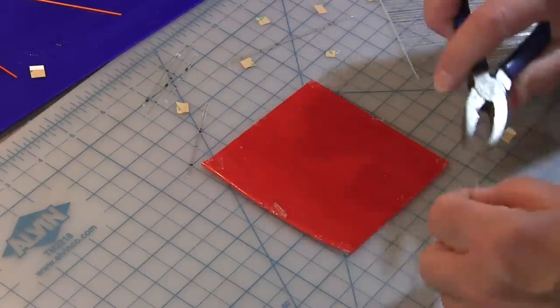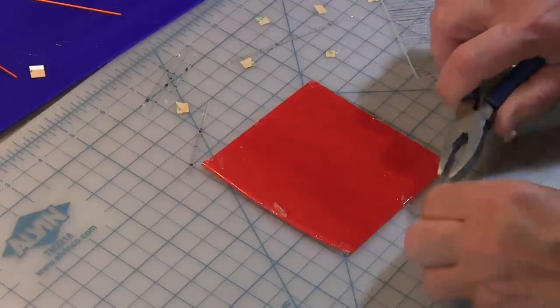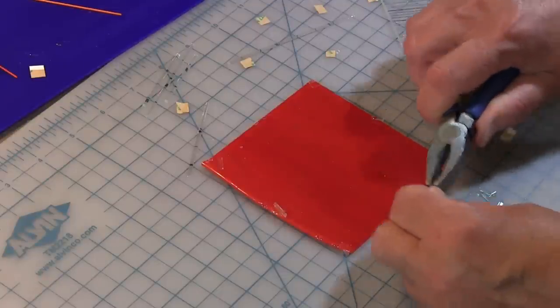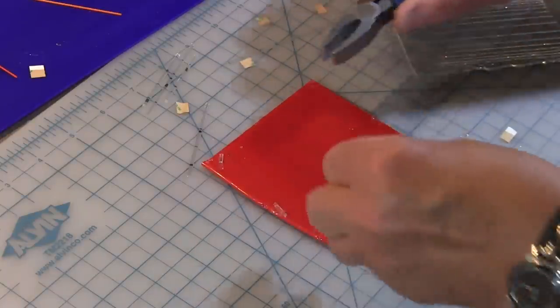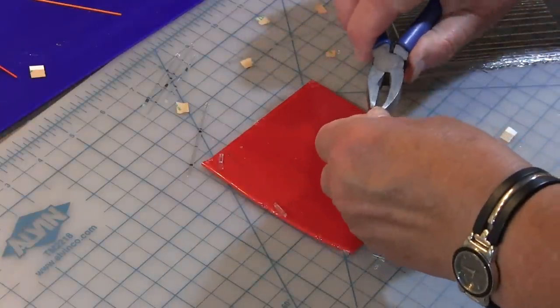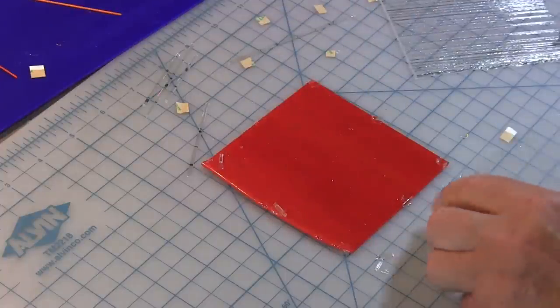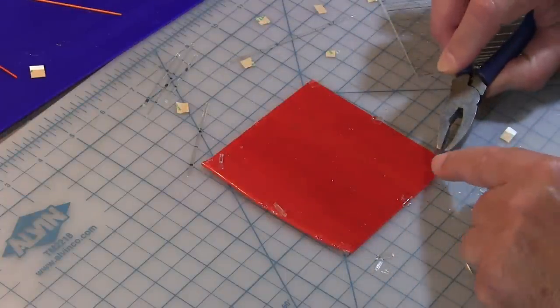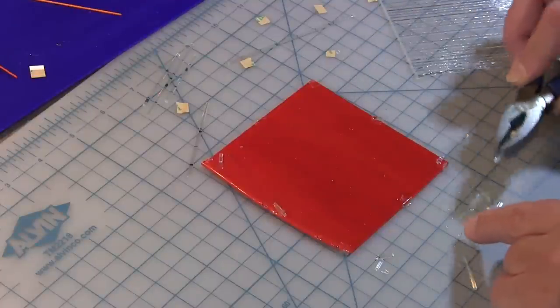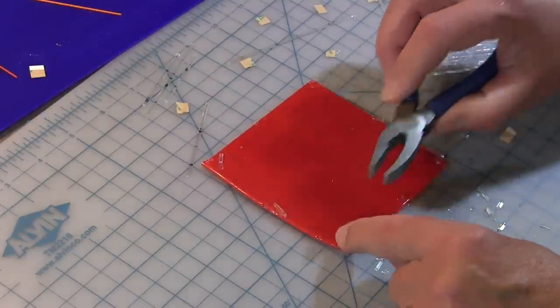And then using your grozing pliers, you can take clear stringers and break them off. You want to have little tiny pieces and pick up those tiny little pieces and just place them down on the tape, like that.